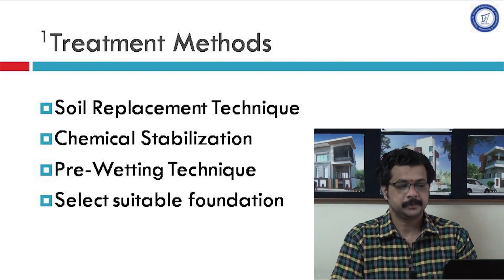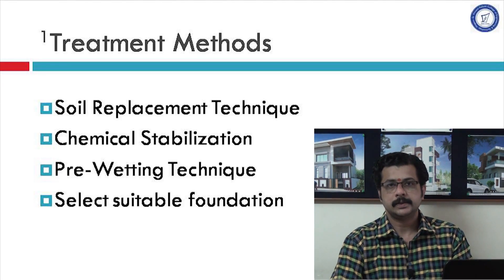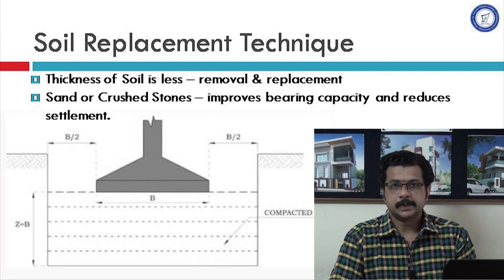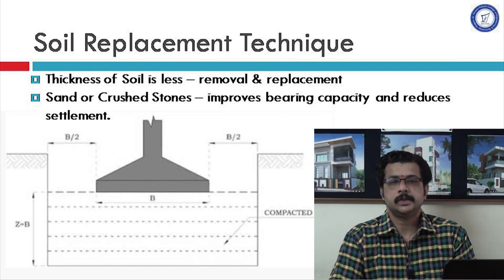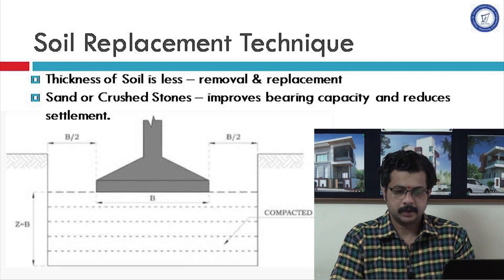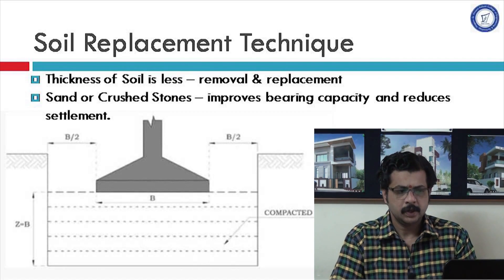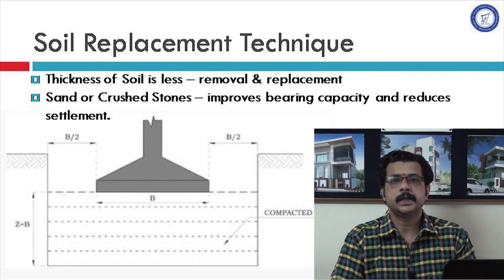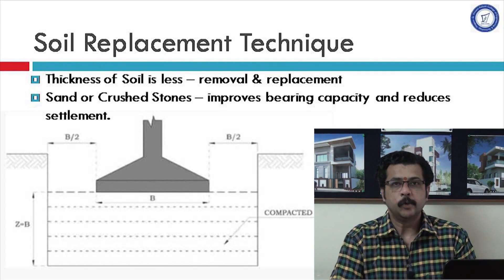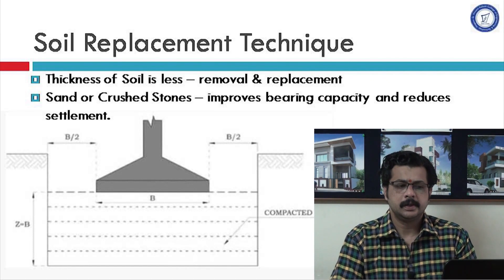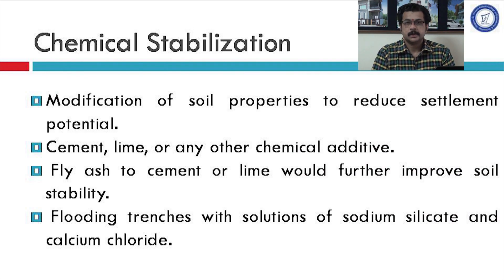There are four treatment methods: soil replacement, chemical stabilization, pre-wetting, and selection of a suitable foundation. In the soil replacement technique, when the thickness of the collapsible soil layer is very small, the best solution is to remove the soil. After removal, it can be replaced in the trench as compacted layers, or the excavated pit can be filled with new material like sand or crushed aggregate. This improves both the bearing capacity and settlement characteristics of the soil, and is most suitable for road construction.